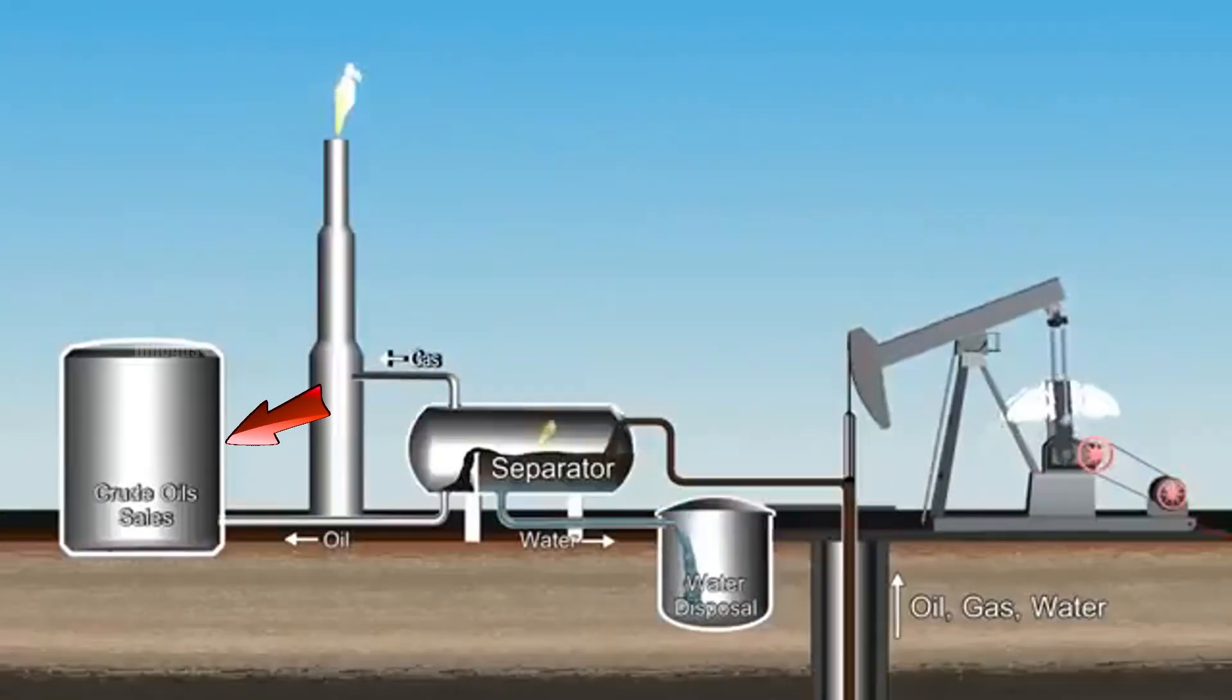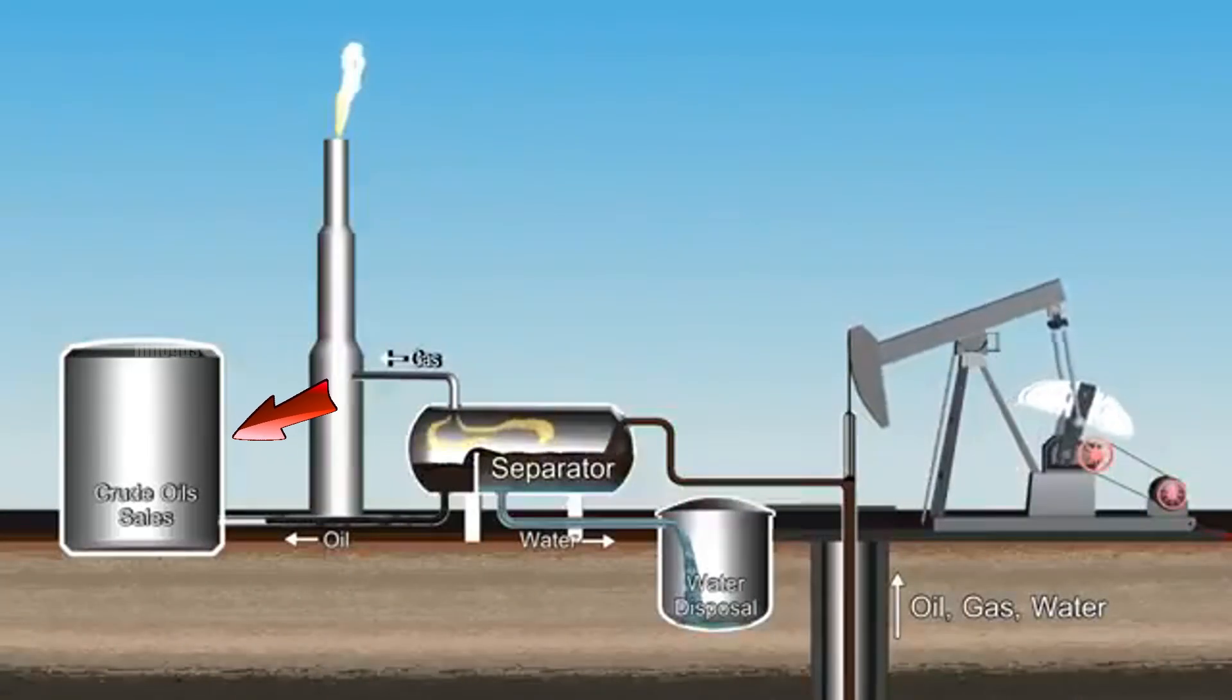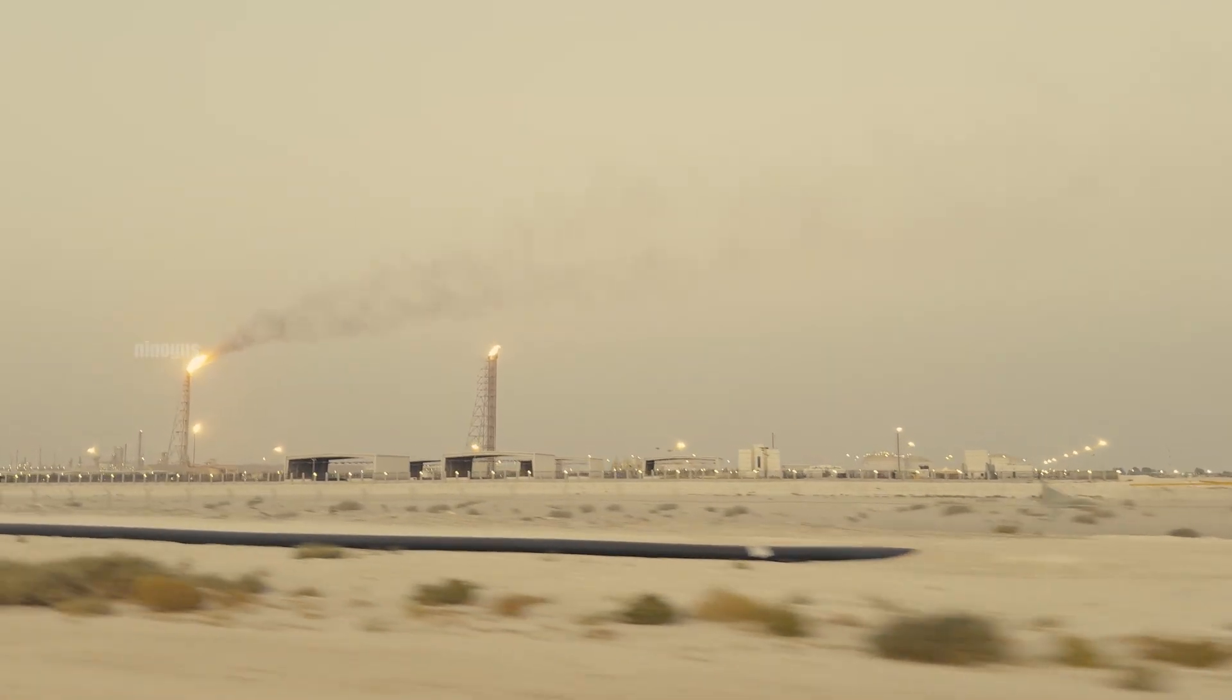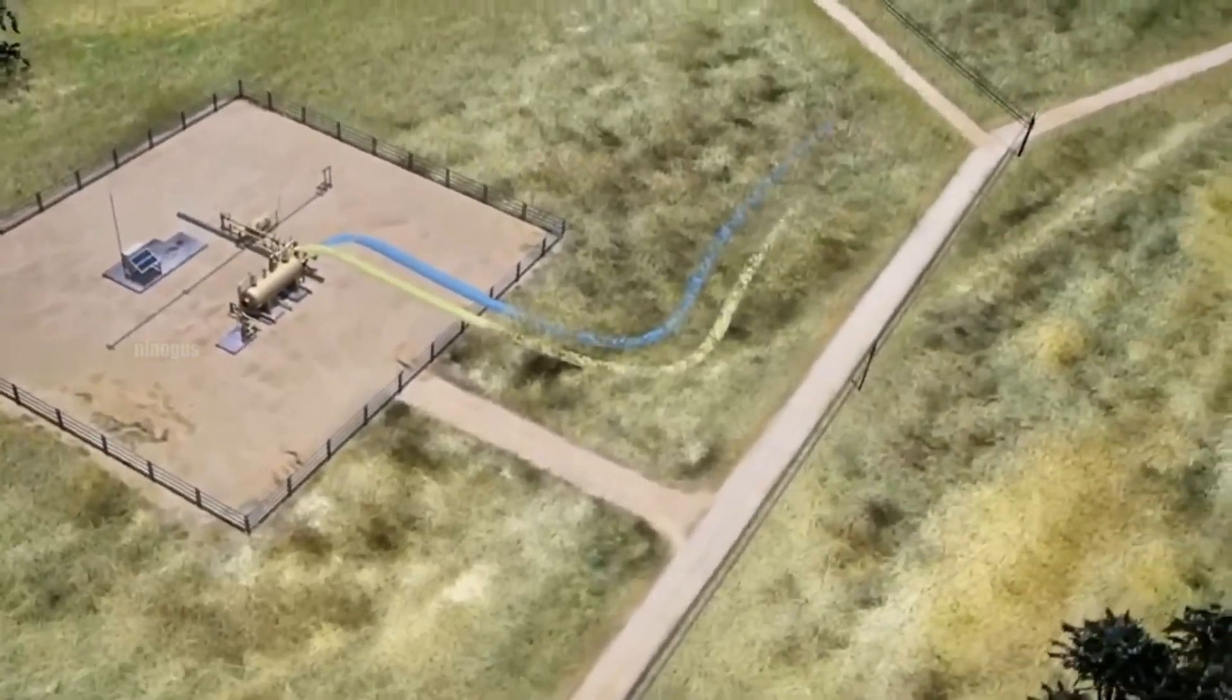The crude oil, which is lighter than water but heavier than gas, stays in the middle. It is then channeled into an oil storage tank to be sent to a refinery for processing.